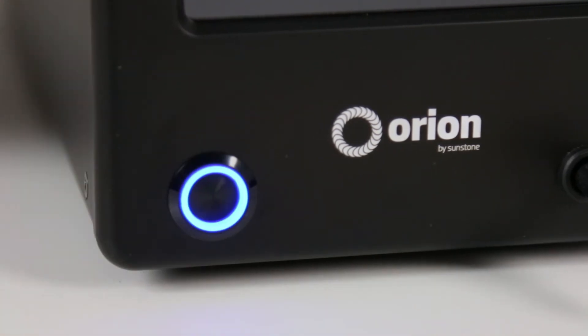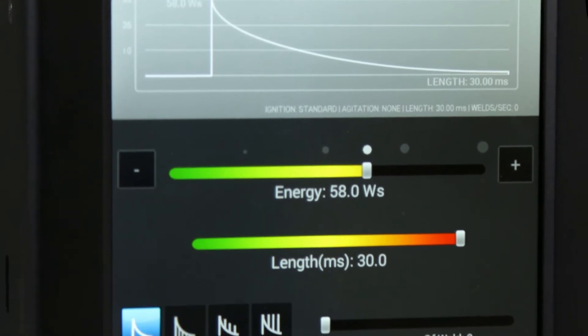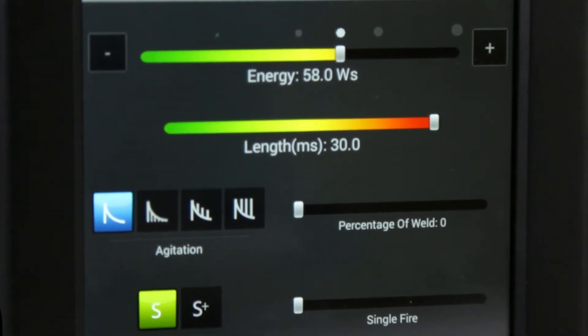Push the power button on the front of the welder and the blue ring should light up indicating startup. Wait for the welder to power up and you are ready to start welding.